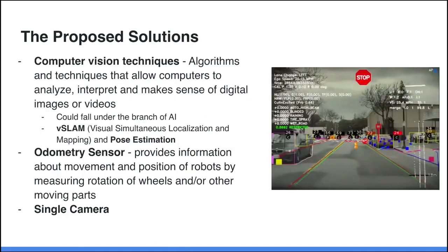In order to solve these challenges and make a product that actually works, the company has proposed two solutions. The first is to use computer vision techniques — algorithms that allow computers to analyze, interpret, and make sense of digital images or videos. A great example is from an autonomous car, which uses camera technology to constantly analyze video content to figure out where things are and take action accordingly. These computer vision techniques generally fall under the branch of AI, or more specifically machine learning.